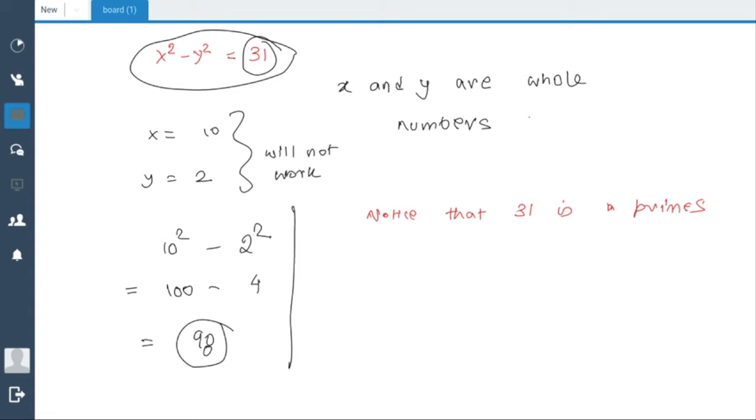31 has only two numbers dividing itself: 1 and 31. That's the definition of a prime number. A prime number is a number which is divisible by itself and 1. So in this case, x² - y² = 31, and 31 is a prime number. So we will be able to use that fact very efficiently.